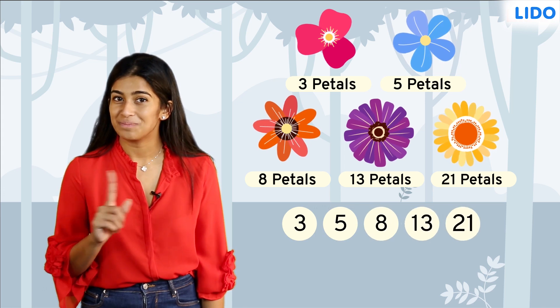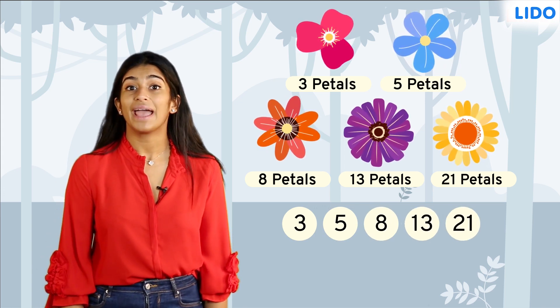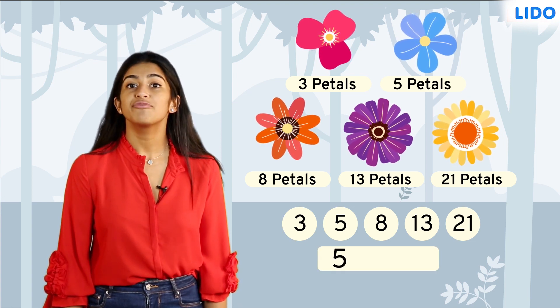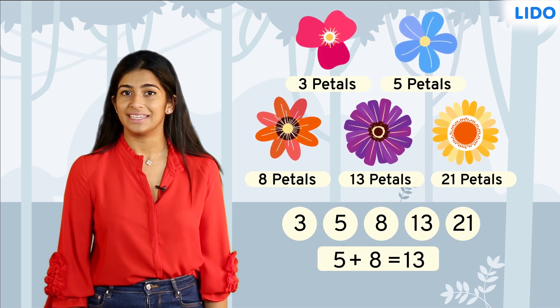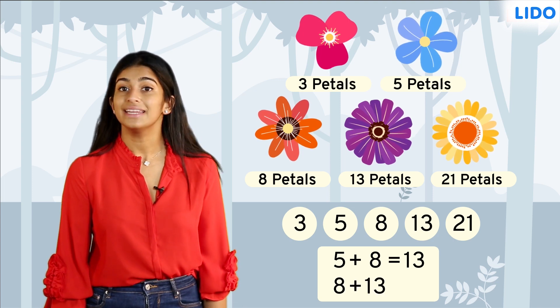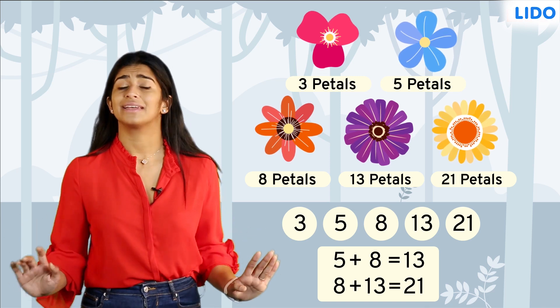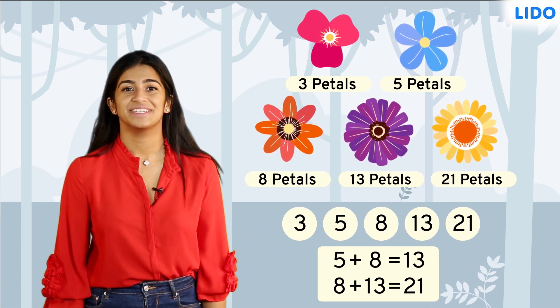Do you notice the connection between these numbers? You get each number by adding the previous two numbers together. For example, 5 plus 8 gives you 13, and 8 plus 13 gives you 21. This right here is the most fascinating pattern mathematicians have ever discovered.